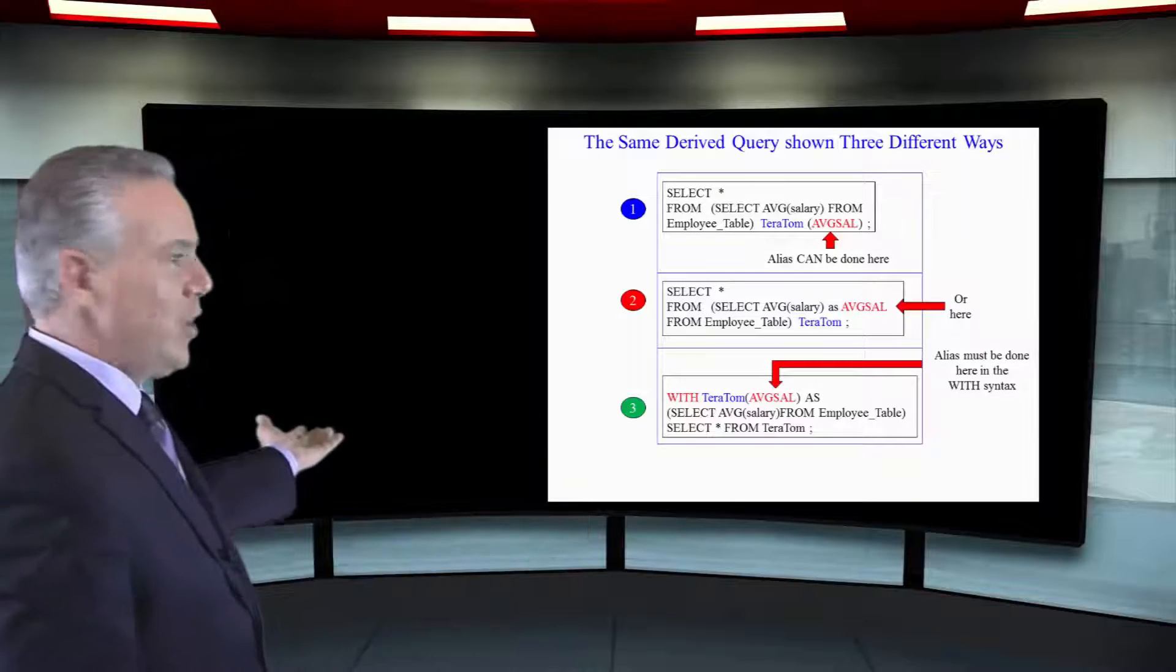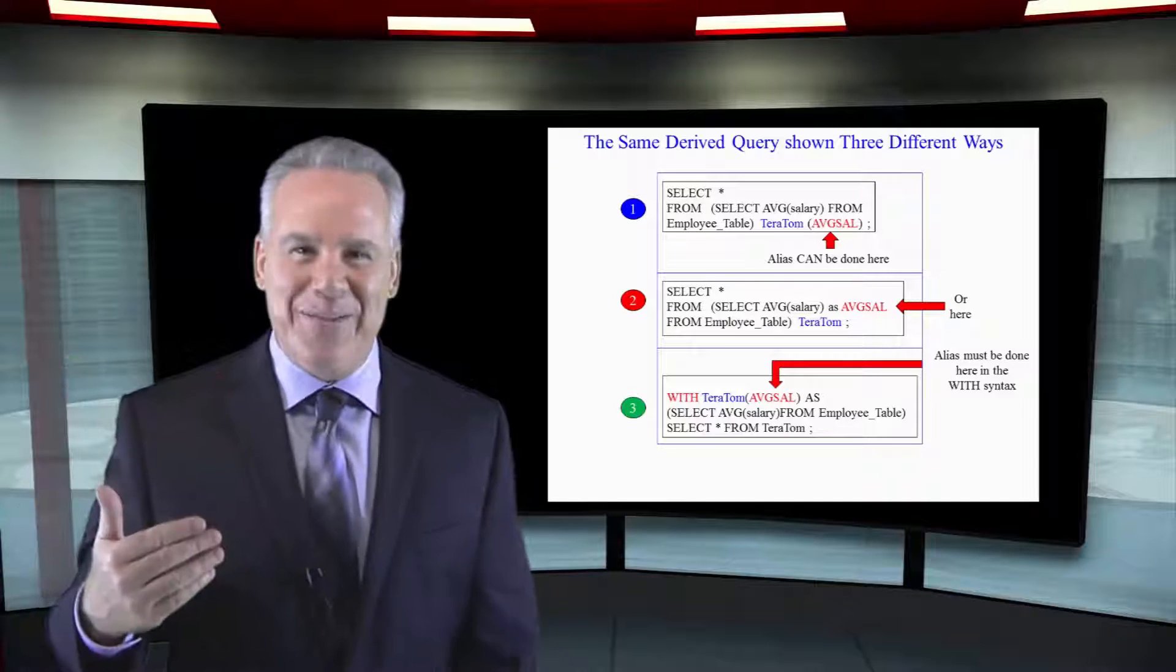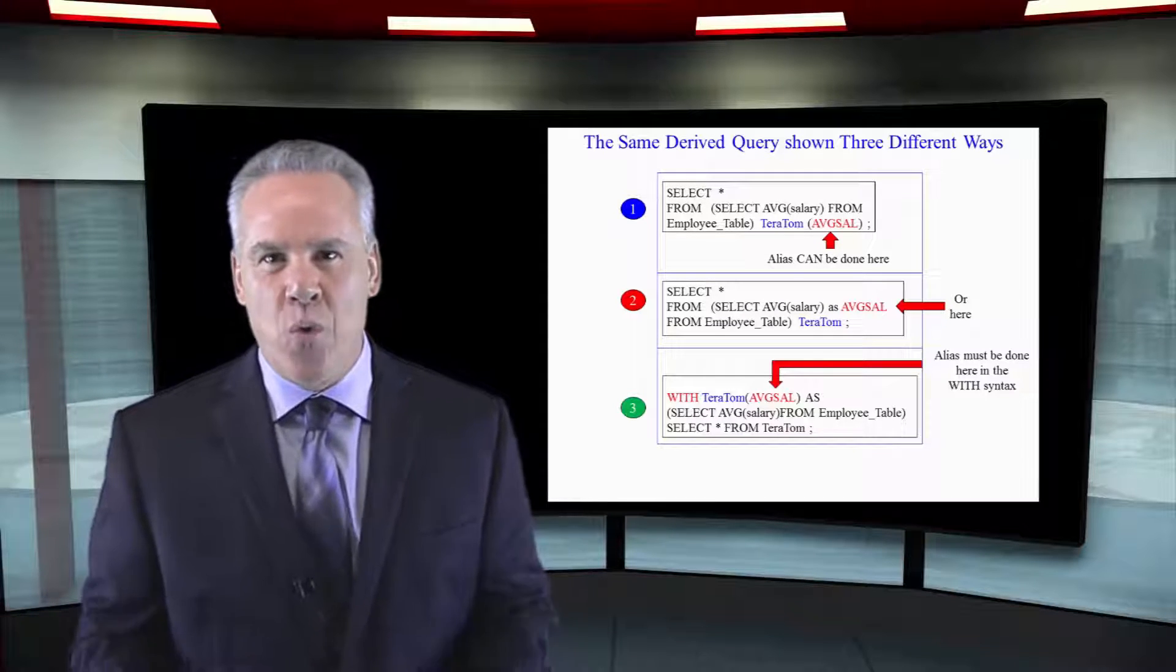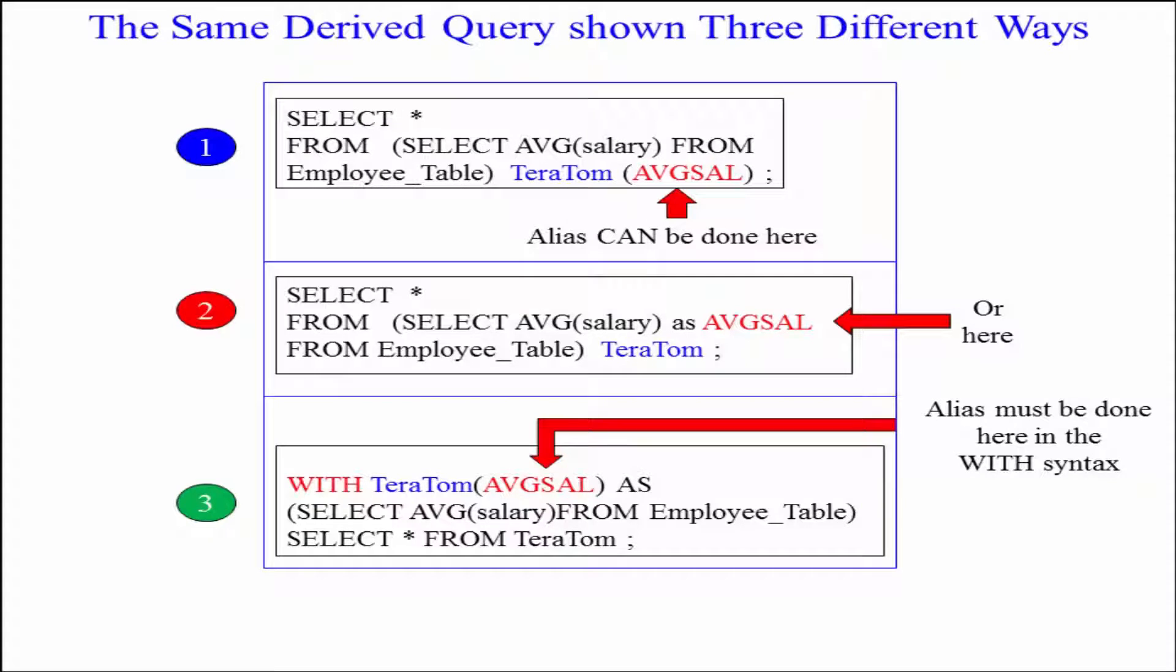And lastly, you can see this is a derived table with the with command. It's really clever. It's almost as if you create the derived table and then do your real query. So I go with Teratom, Teratom, open paren, AVGSAL. And all I've done so far is saying table's going to be called Teratom. Got one column in it called AVGSAL as open paren, close paren, timeout, select average salary from the employee table. And then I start the real query and say select everything from Teratom.